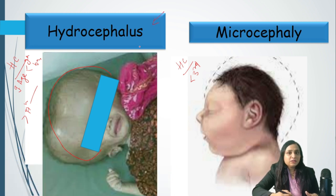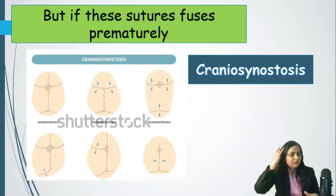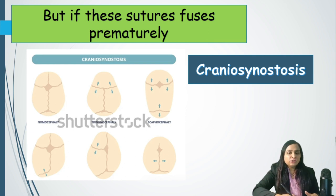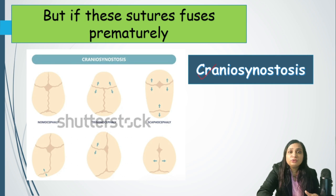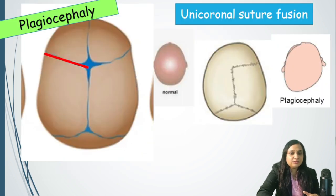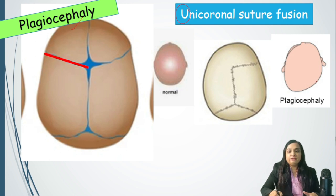After looking at the shape and size of the head, we need to see whether there is premature fusion of the sutures of the skull — if present, it is called craniosynostosis. For coronal suture fusion, as seen in this picture, it is called plagiocephaly.